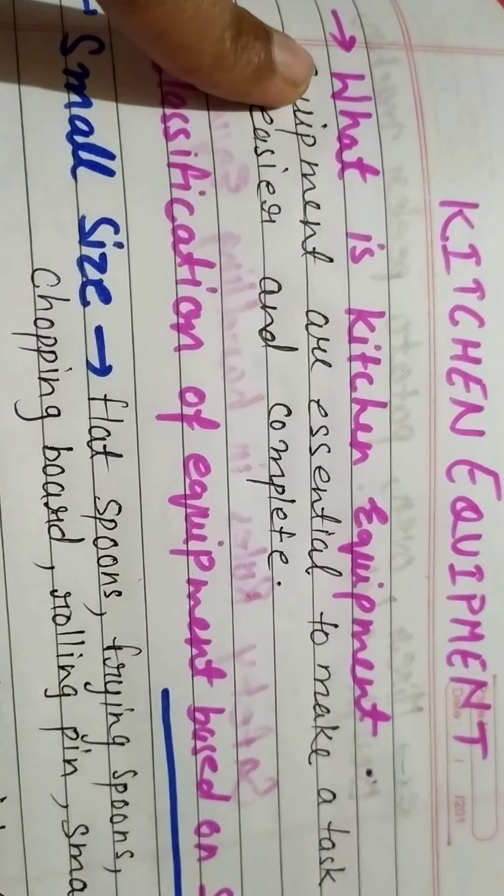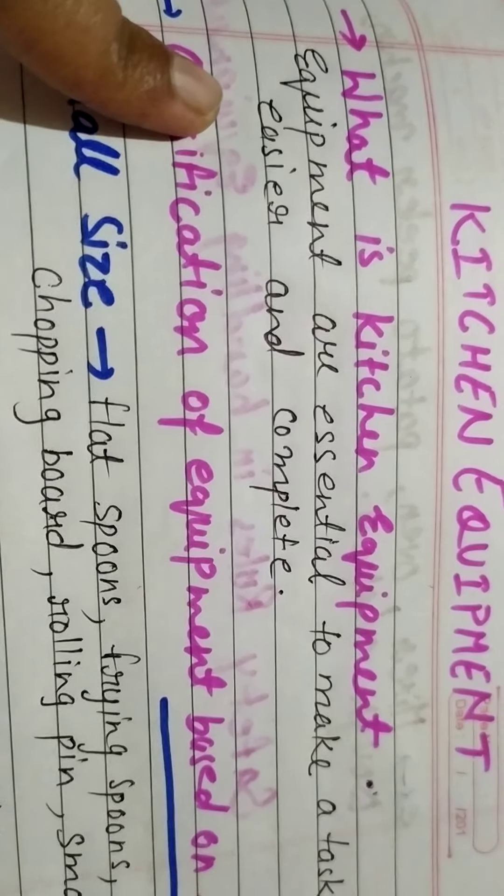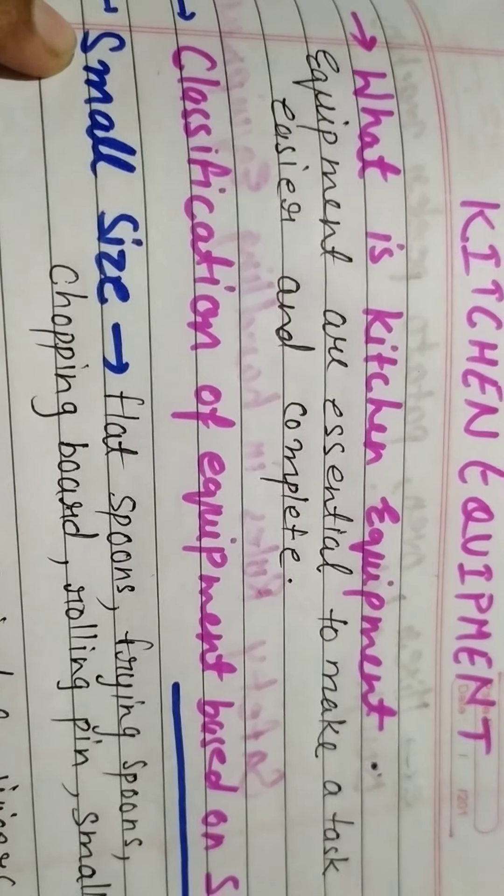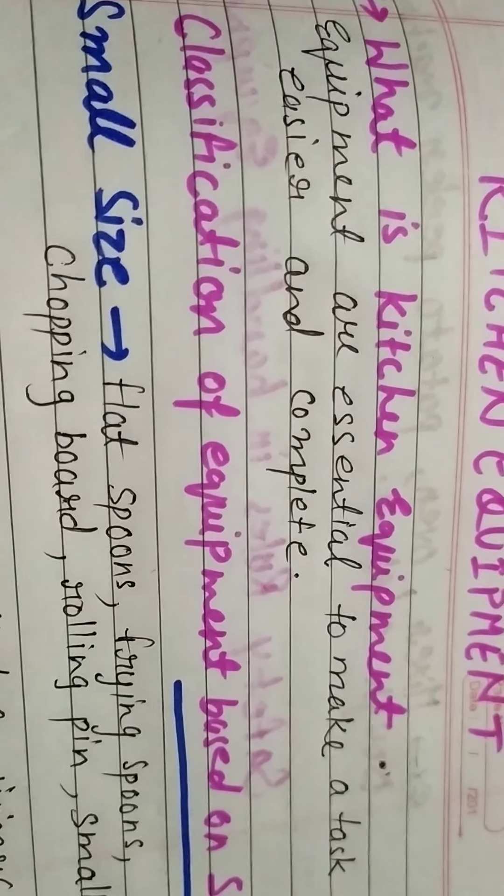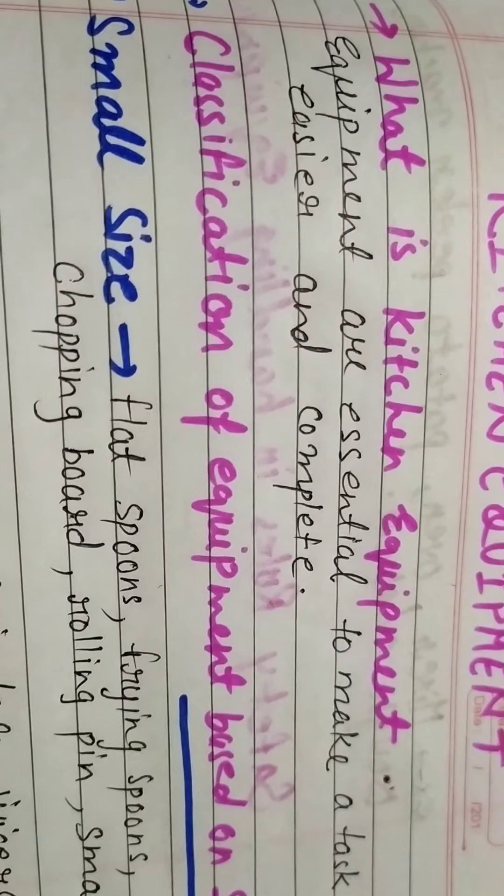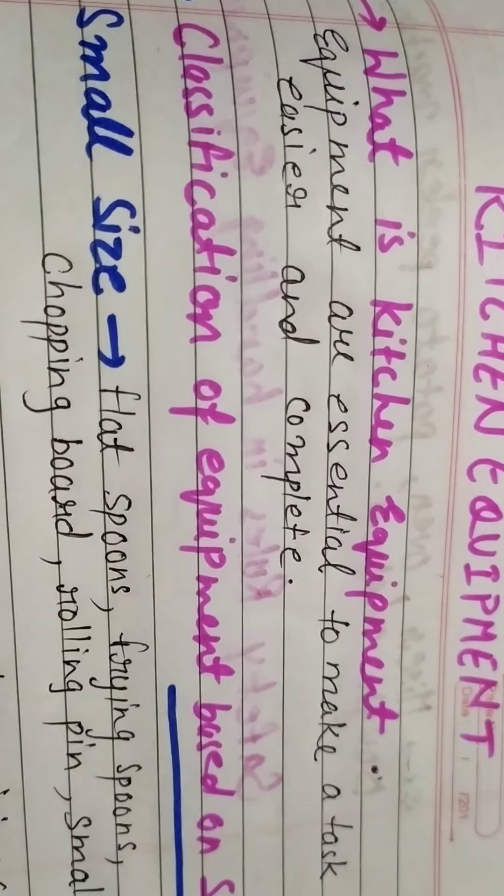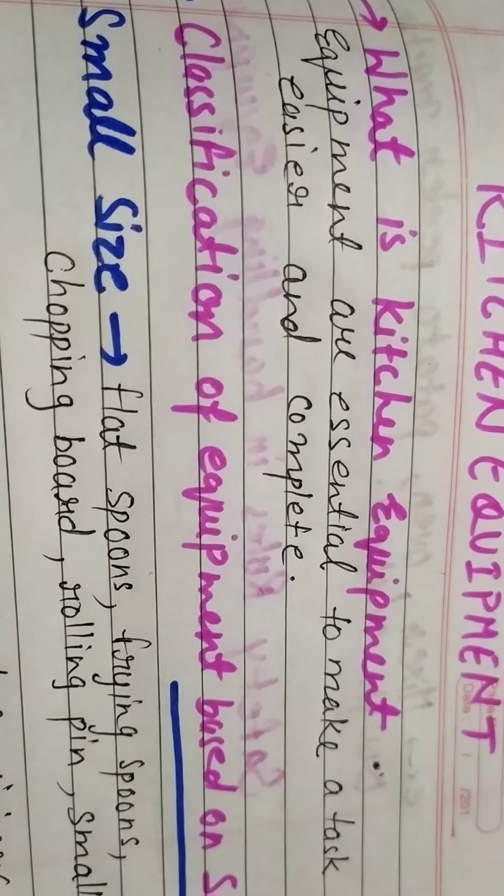The chapter is Kitchen Equipments. So what is Kitchen Equipments? Equipments are essential to make a task easier and complete. For our kitchen work, to save our time and energy, we use the equipments.